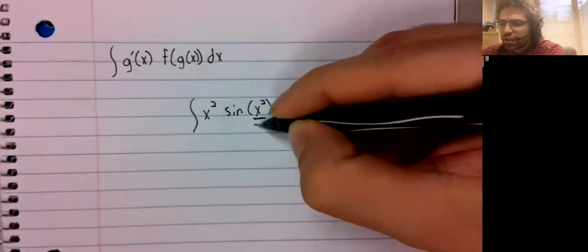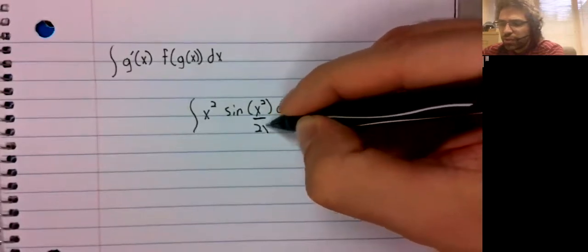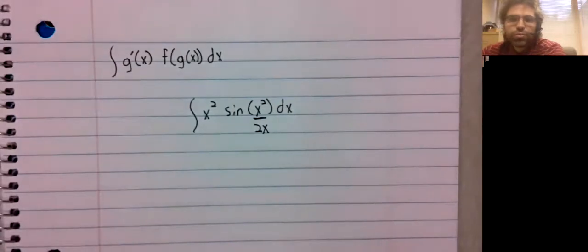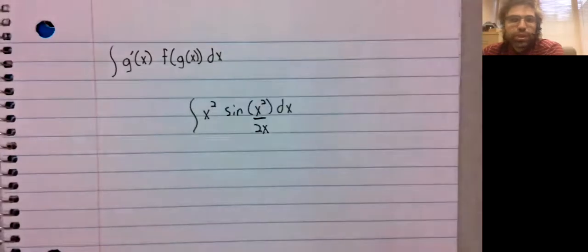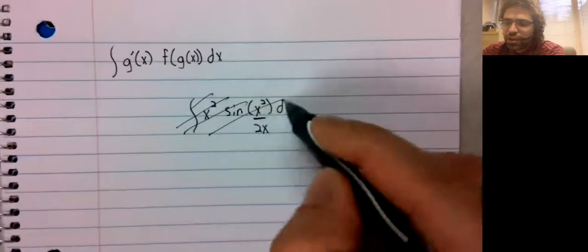The derivative of x squared is 2x, and that isn't what we have here. There's nothing to be done about it.